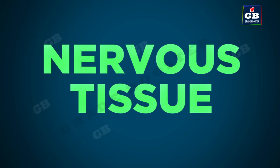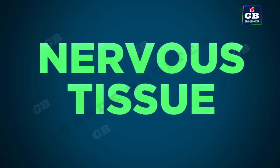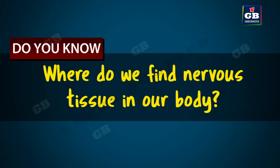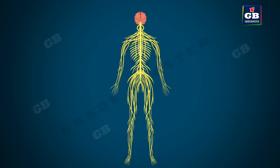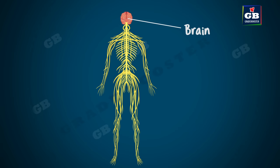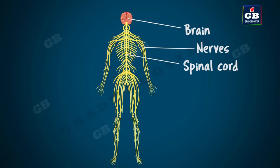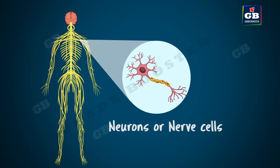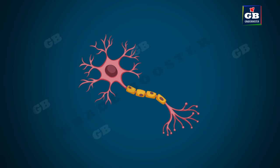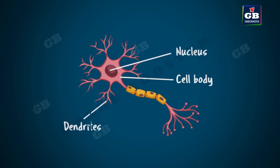Now let us learn about nervous tissue. Nervous tissue is found in organs like the brain, spinal cord, and nerves. The cells of nervous tissue are called neurons or nerve cells. A neuron has a cell body with a nucleus. Short processes arising from the cell body are called dendrites. There is also a long hair-like projection arising from the cell body called the axon.